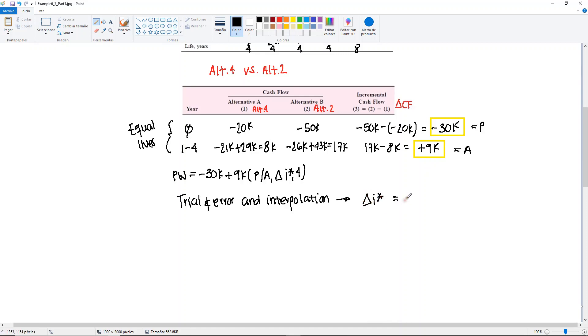You should find delta i star equal to 7.7%. This is the answer we're looking for, and we're going to compare this 7.7% to the minimum attractive rate of return that's given, which is 12%. In this case, it is going to be less, so according to the rules, if it's less than, then we must eliminate alternative 2 or alternative B, and alternative 4 or alternative A in our case is a survivor.